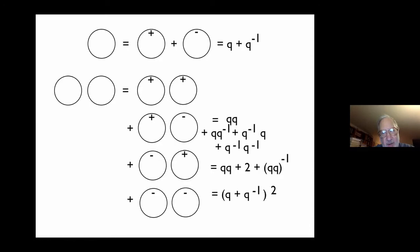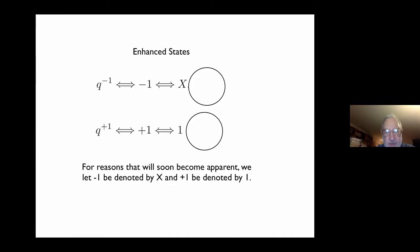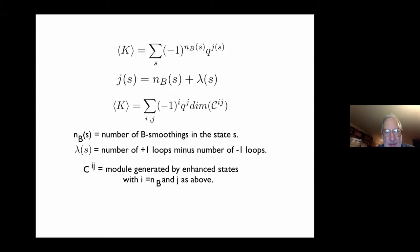What happens is that you have pushed the binomial theorem into the combinatorics. If you evaluate two loops, you get Q plus Q inverse squared. When you expand in terms of enhanced states, you have four plus/minus combinations: Q squared, Q·Q inverse, Q·Q inverse, and Q to the minus two. It's easy to see you've pushed the binomial theorem over into the combinatorics. It turns out it's convenient to call minus one X and plus one Y. There's going to be an algebra here where X is a good variable and one is the identity.